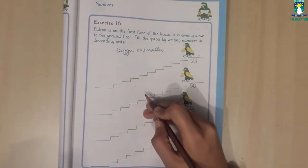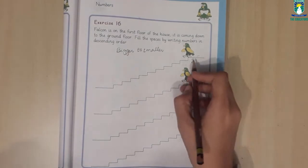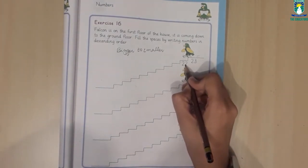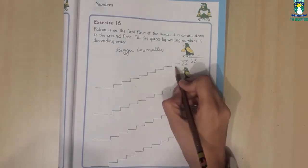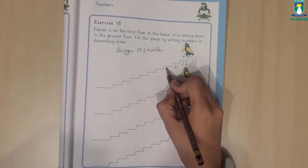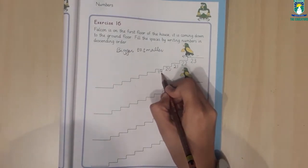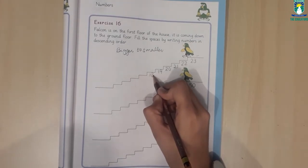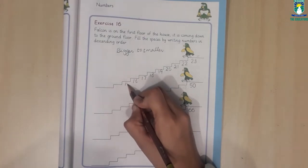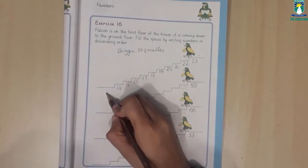We will write the number in descending order. Twenty-three is twenty-two, twenty-one, twenty, nineteen, eighteen, seventeen, sixteen, fifteen, fourteen, thirteen.